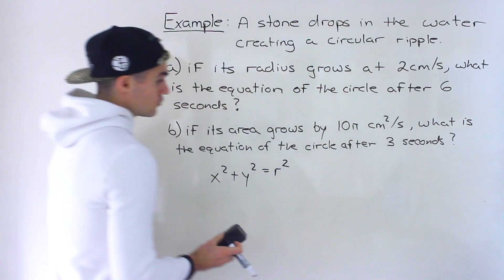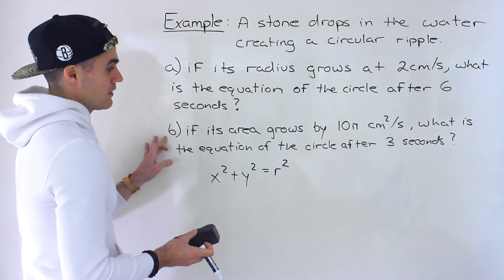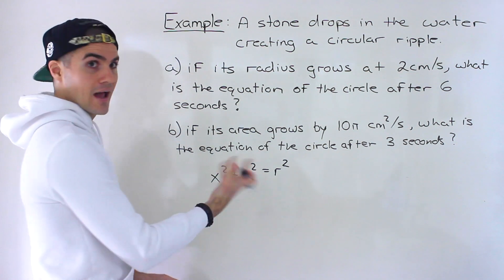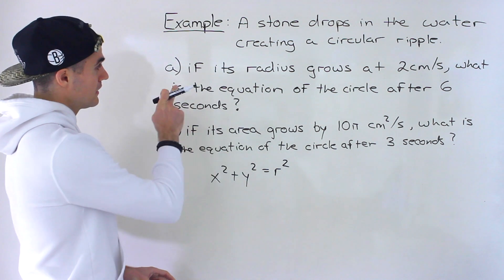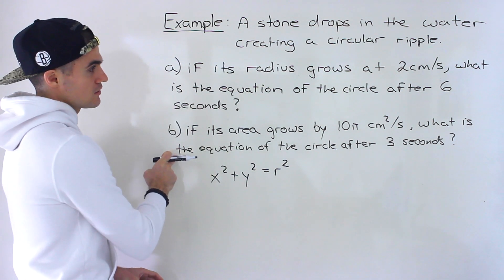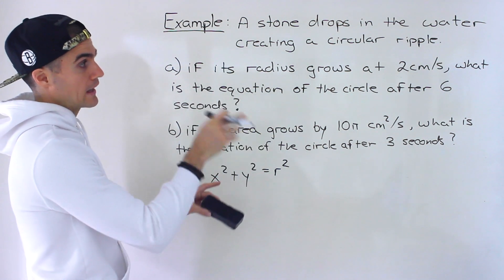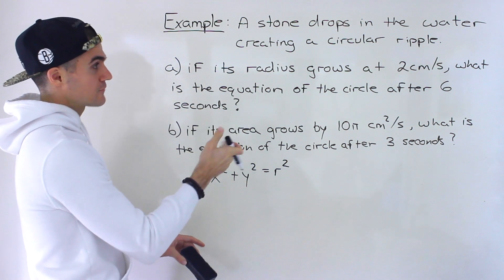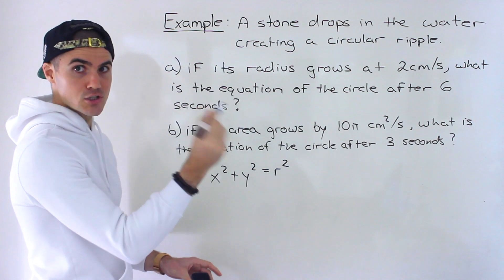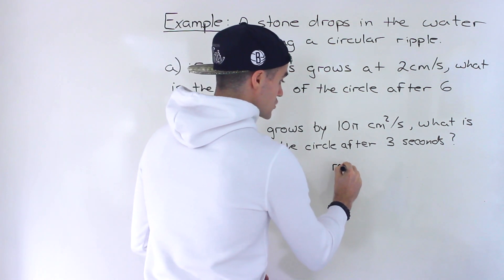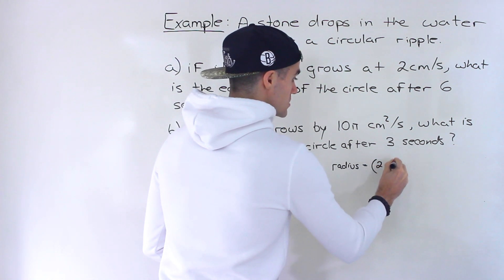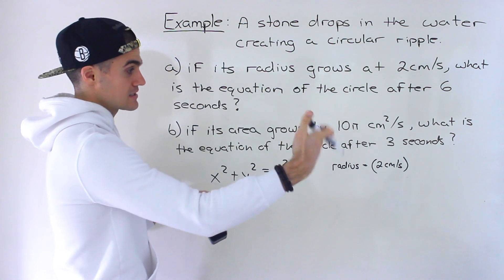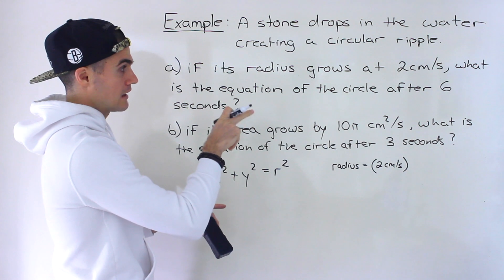Really, what we have to find for both scenarios is the radius. Once we have the radius, we just plug it in to get the equation of the circle. Finding the radius in Part A is a bit easier than Part B because we're told directly how much the radius is growing — two centimeters per second. So what is the radius going to be after six seconds?